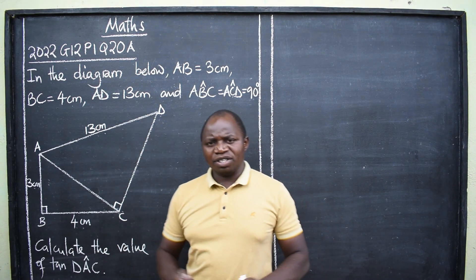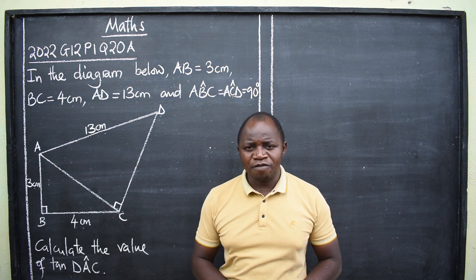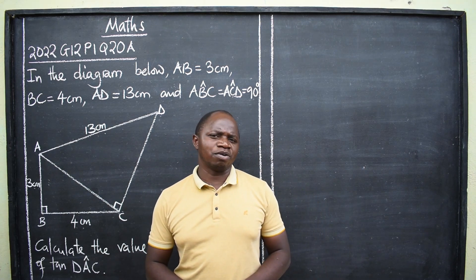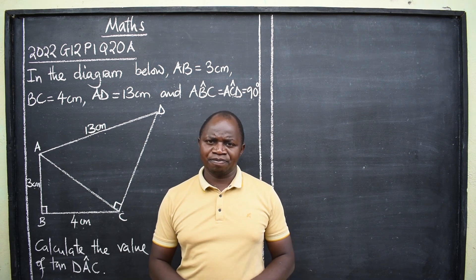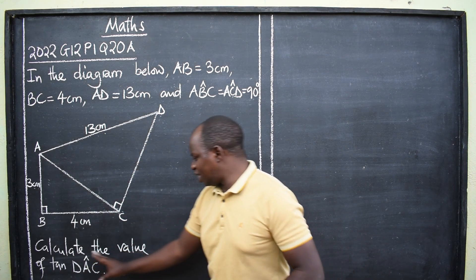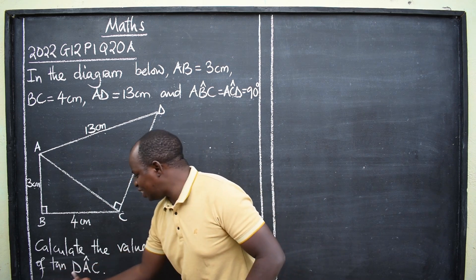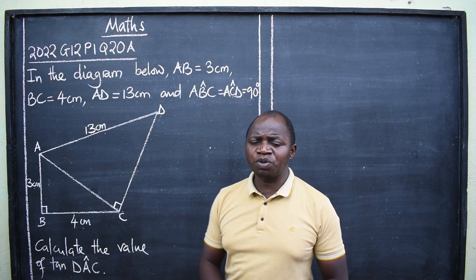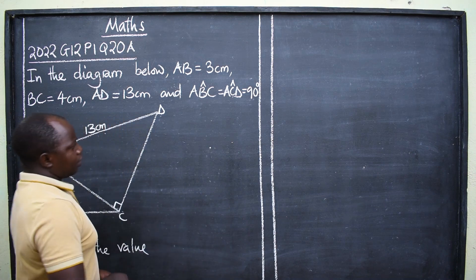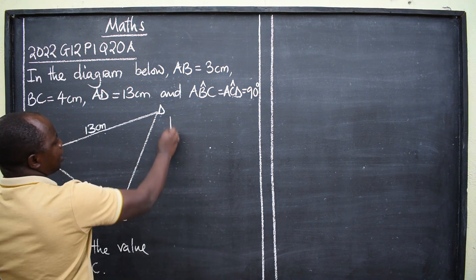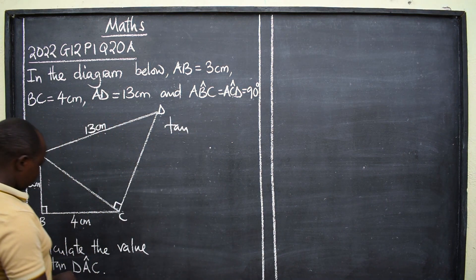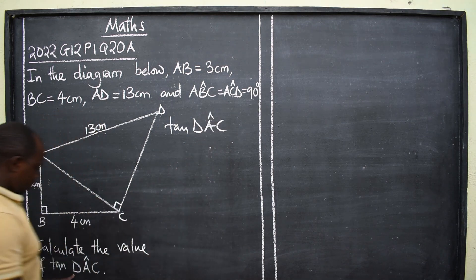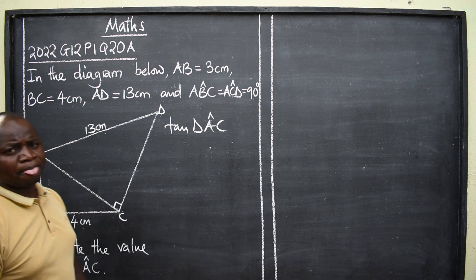The question, ladies and gentlemen, is coming from a very interesting topic in mathematics called trigonometry. The question is: calculate the value of tan DAC. That is what we want to calculate. So let's begin — we want tan DAC.